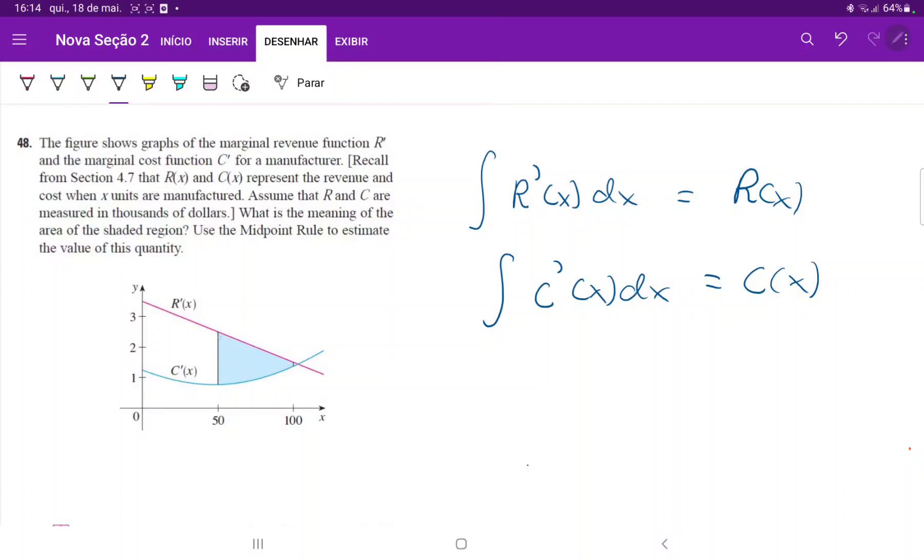Now we can see that this shaded area over here, the one in blue, is actually from 50 to 100. It is the area beneath the pink curve. Maybe I'll draw that in pink.